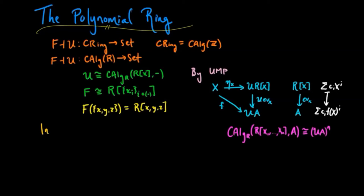So going back to commutative rings, if you have this polynomial ring with n variables, this polynomial ring with coefficients in integers,